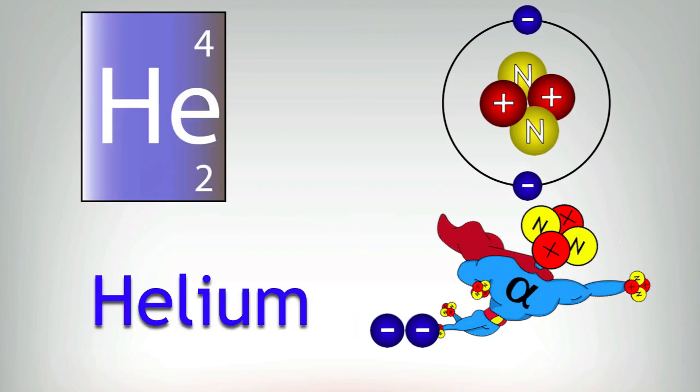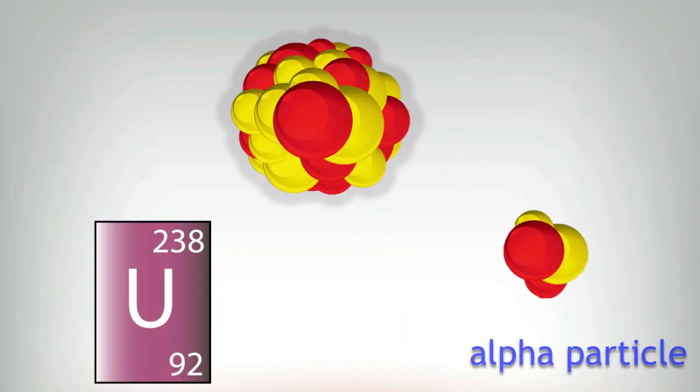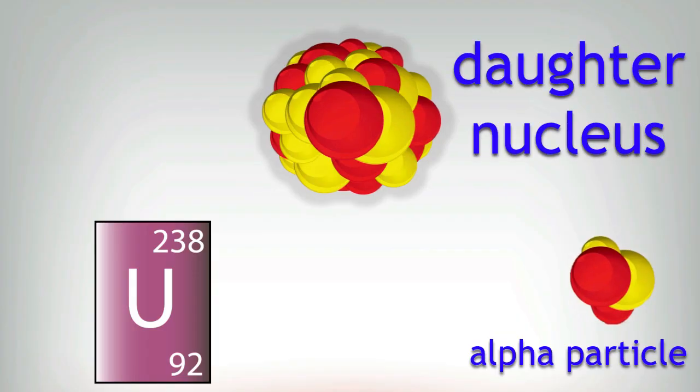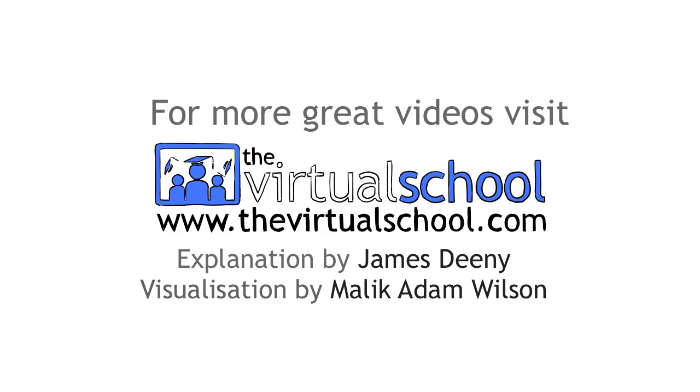So there you have it. An alpha particle is a helium nucleus waiting for two electrons. What about the nucleus it leaves behind? This nucleus is called the daughter nucleus. This has lost two protons and two neutrons. The newly formed daughter nucleus loses four in its mass number and two in its proton number. So there you go.